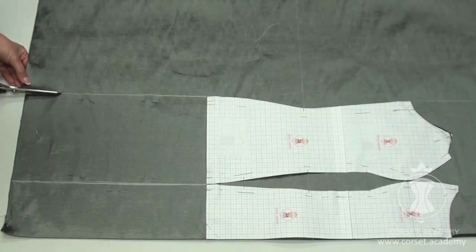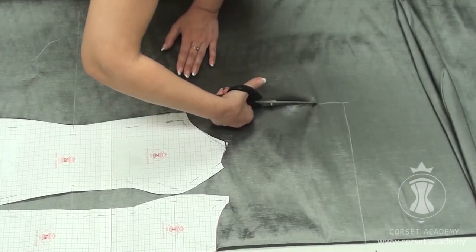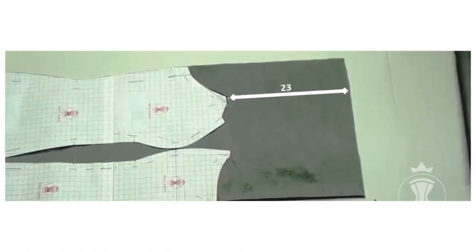I cut out each piece following the side seam line. I mark another 23 centimeters upwards so I can fold the fabric and simultaneously cut out the same fabric interfacing for the cups.